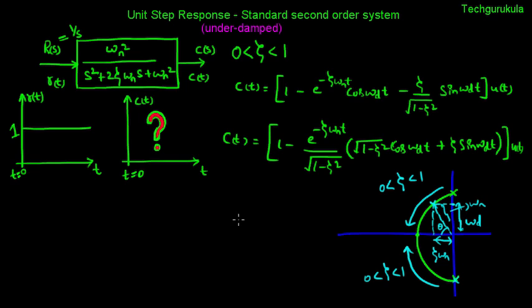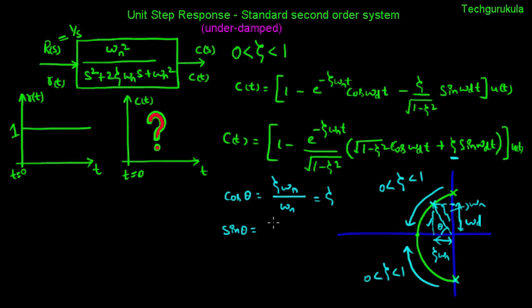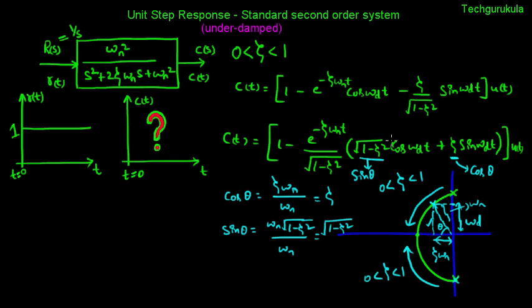We define an angle theta for this root. Cos theta equals the adjacent side zeta omega n over the hypotenuse omega n, so cos theta equals zeta. Sin theta equals the opposite side omega d over the hypotenuse omega n, which equals the square root of 1 minus zeta squared. Substituting these, the expression inside the brackets becomes sin theta times cos omega d t plus cos theta times sin omega d t, which equals sin of omega d t plus theta.